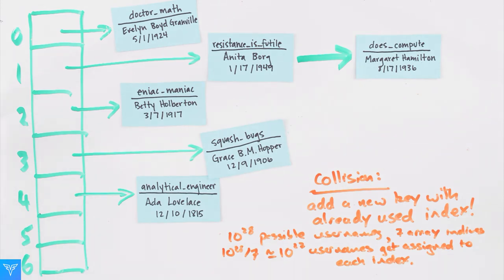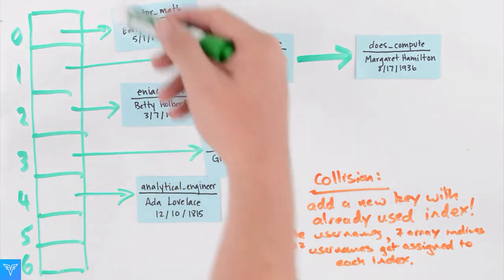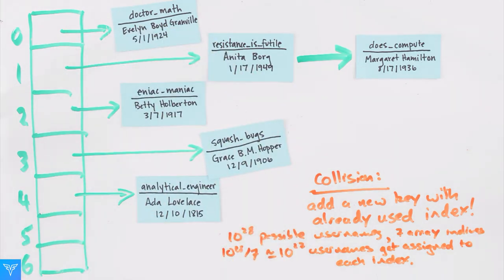If we have an array that's big enough, and we're not really unlucky, then the values will spread themselves out more or less evenly across the array, keeping lookup times short. When that happens, we call the hash function a good hash.